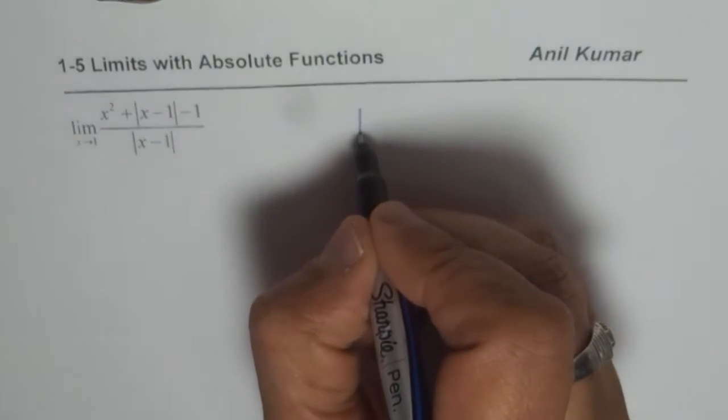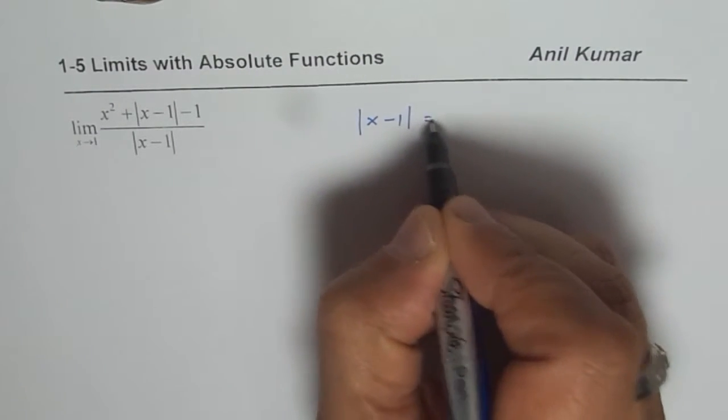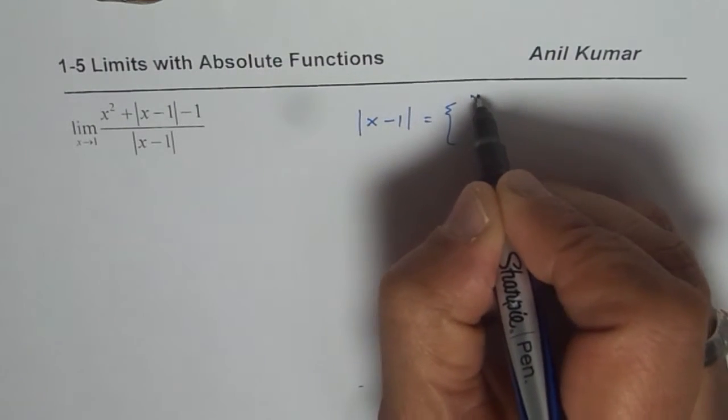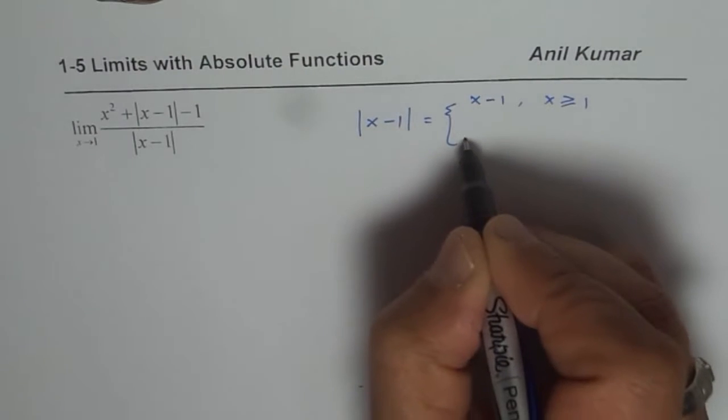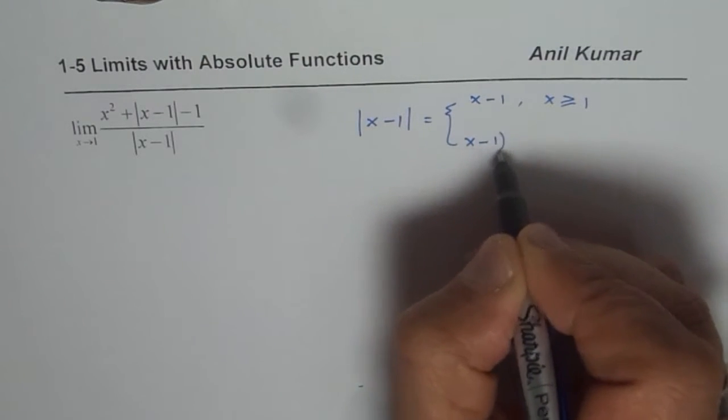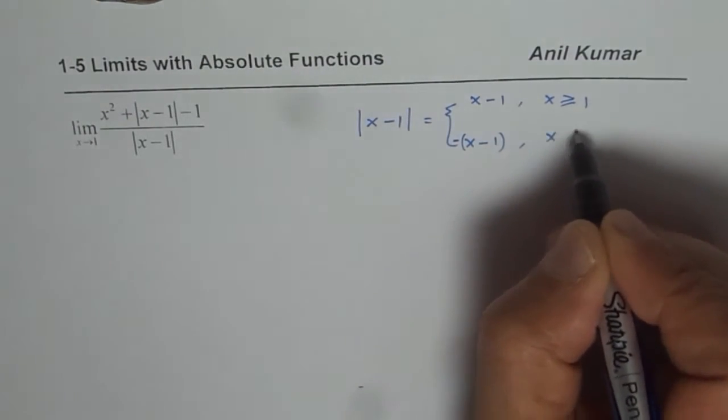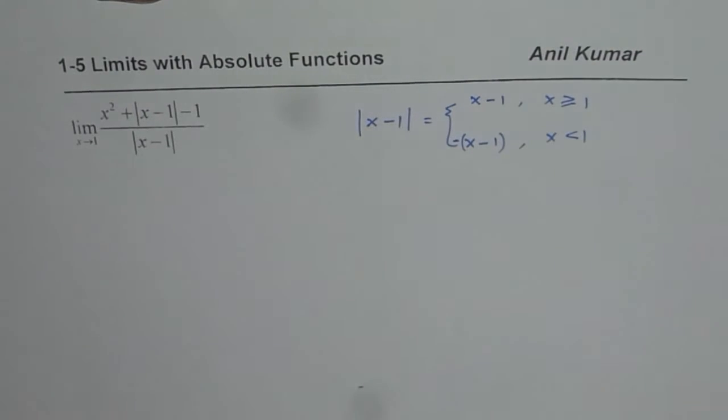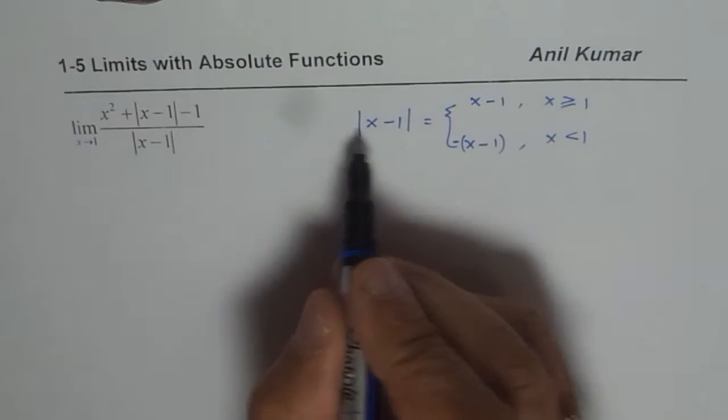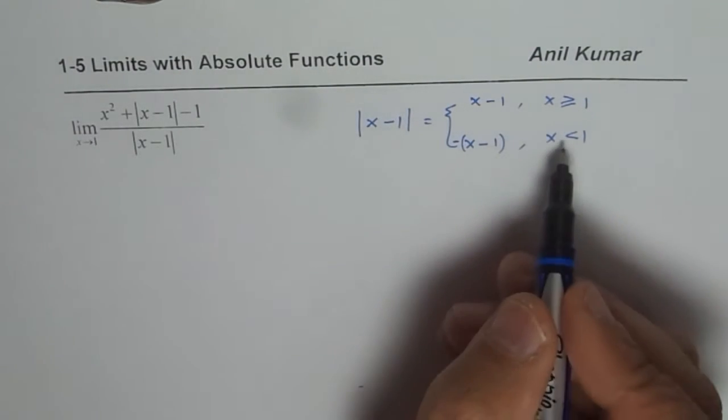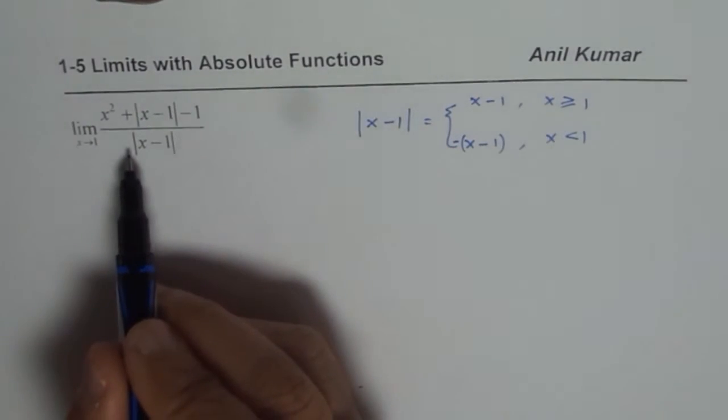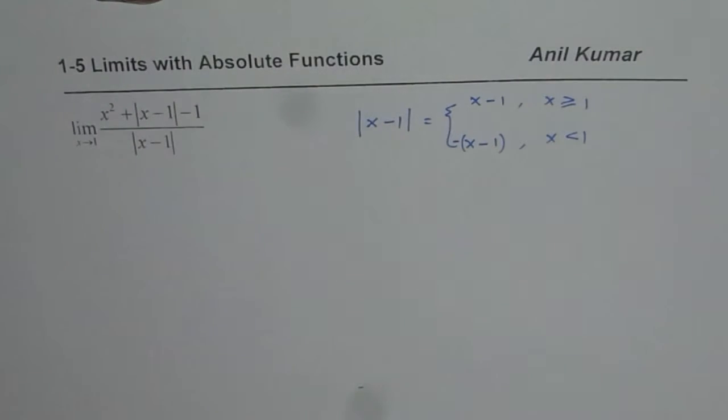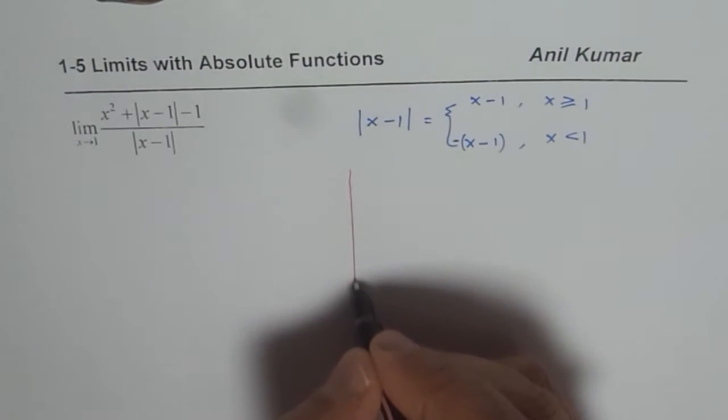So in our case, it is absolute x minus 1. It could be written as x minus 1 if x is greater than or equal to 1 and it is equal to minus of x minus 1 if x is less than 1. So that is how you define your function. So let us say this is the definition. So that clearly shows that to solve this limit question, we have to basically split it into two parts. So always it is like this.